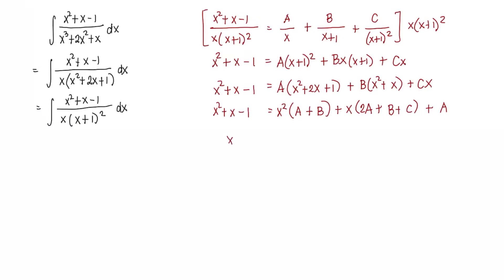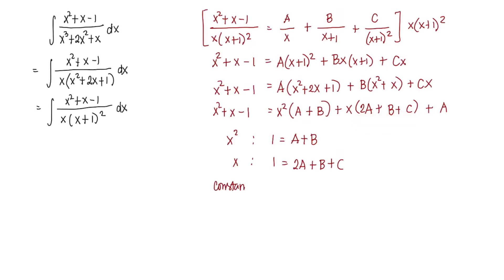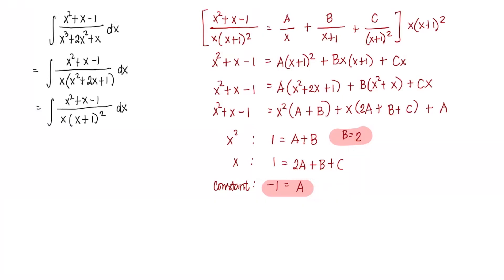We equate coefficients. For x squared: A plus B equals 1. For x: 2A plus B plus C equals 1. For the constant: A equals negative 1. So we immediately get A equals negative 1. Substituting into the first equation gives B equals 2. Substituting A equals negative 1 and B equals 2 into the second equation gives C equals 1.